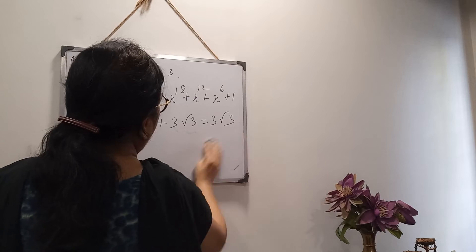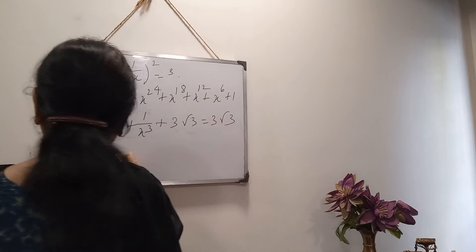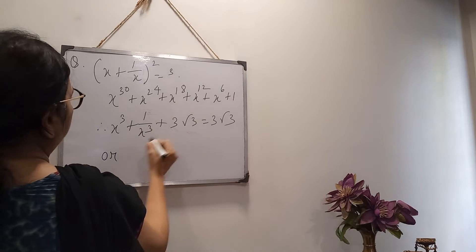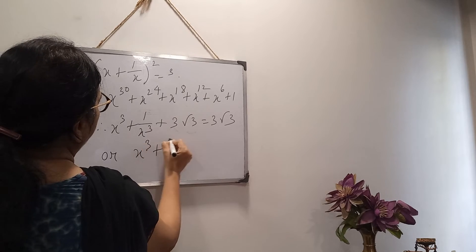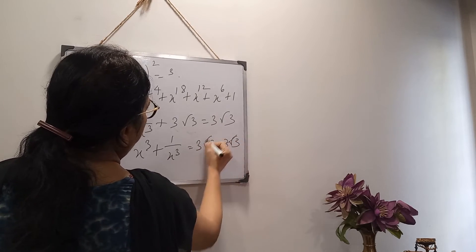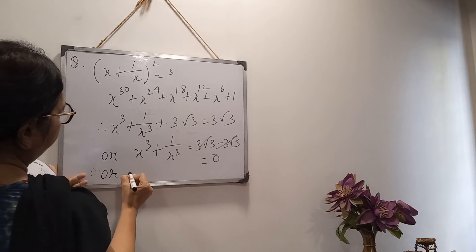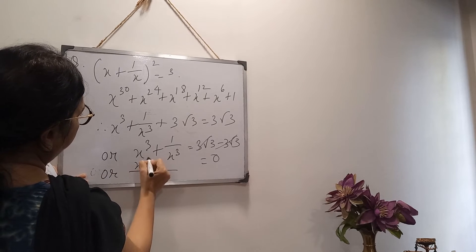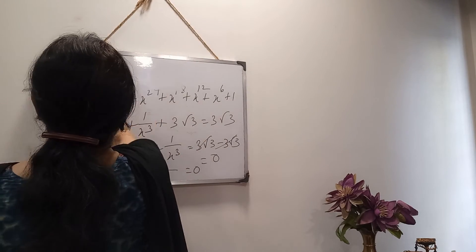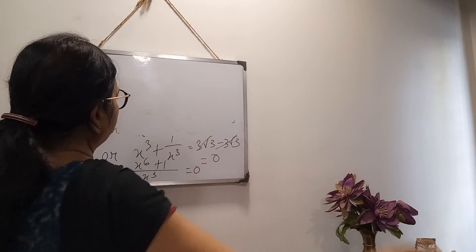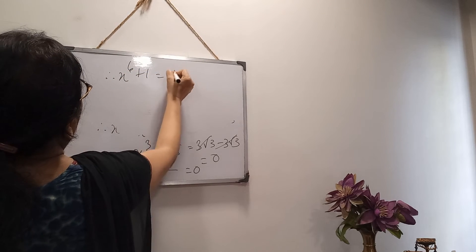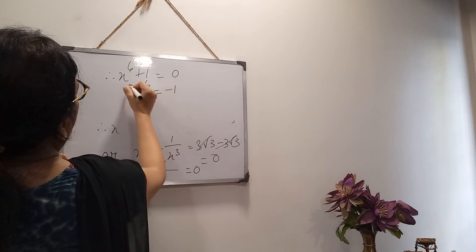Then taking LCM, it becomes x⁶ + 1 = 0. From here we can write, cross multiplying, x⁶ + 1 = 0, which means x⁶ = −1. We have got that result.